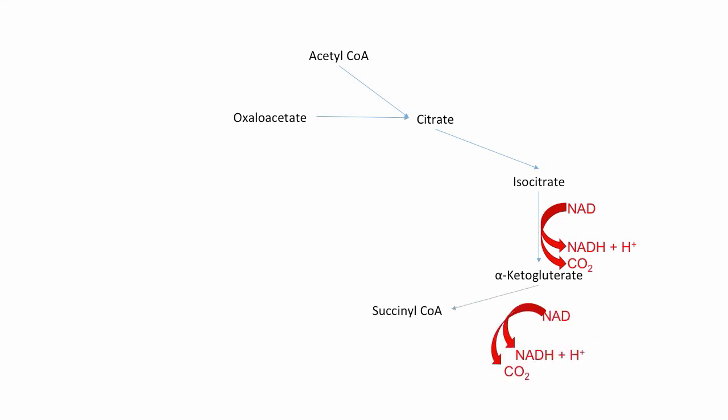The next step is converting alpha-ketoglutarate to succinyl-CoA. This process also produces the same exact products as the previous step, including the byproduct of carbon dioxide.